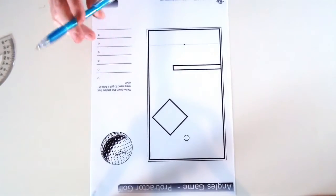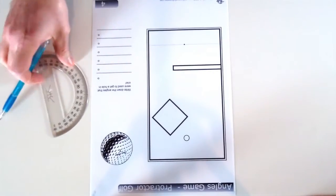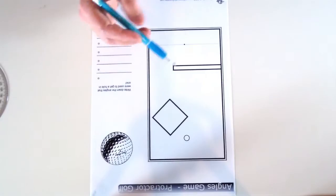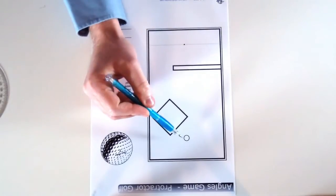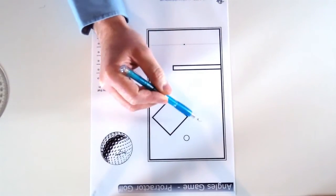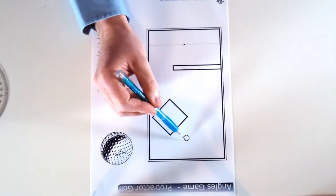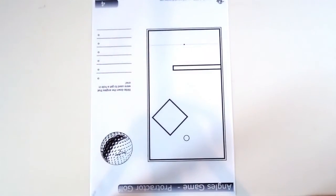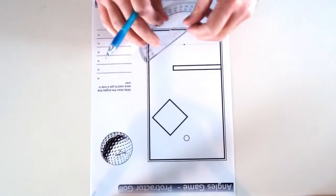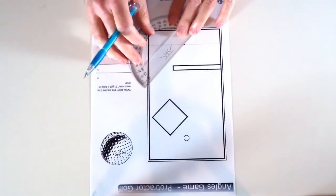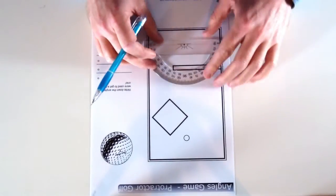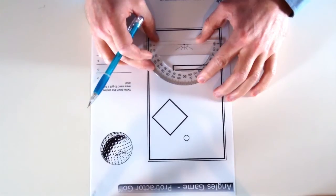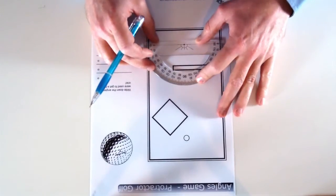To start off with, you'll need a pencil and a protractor. The aim of the game is to pretend you're hitting a ball from the start circle here and you've got to hit the ball and make it bounce into this hole here. To do that you need to pick a direction. You can either just put the ruler down and pick a random direction, or you can be more specific and put the protractor down.